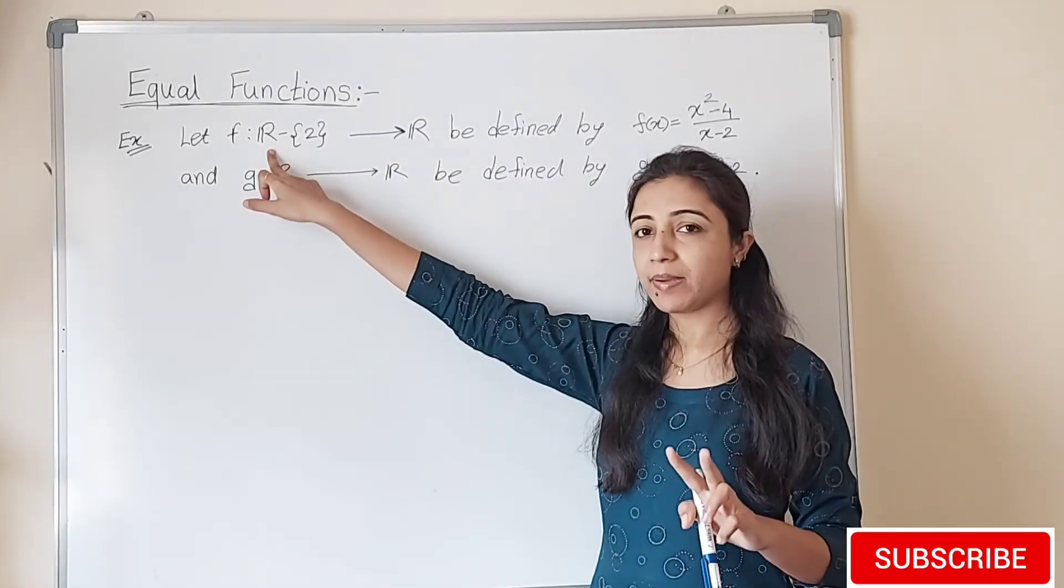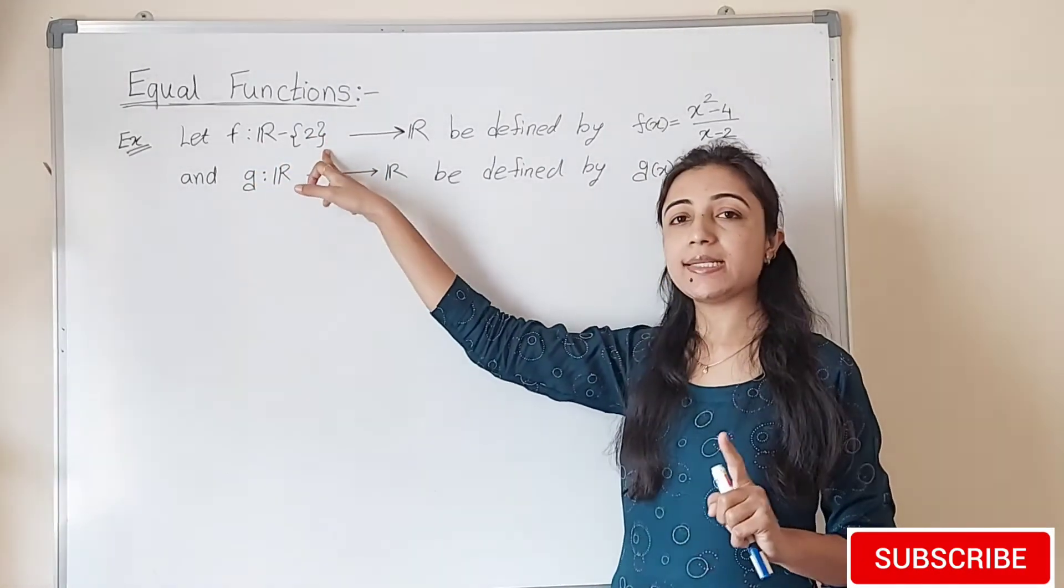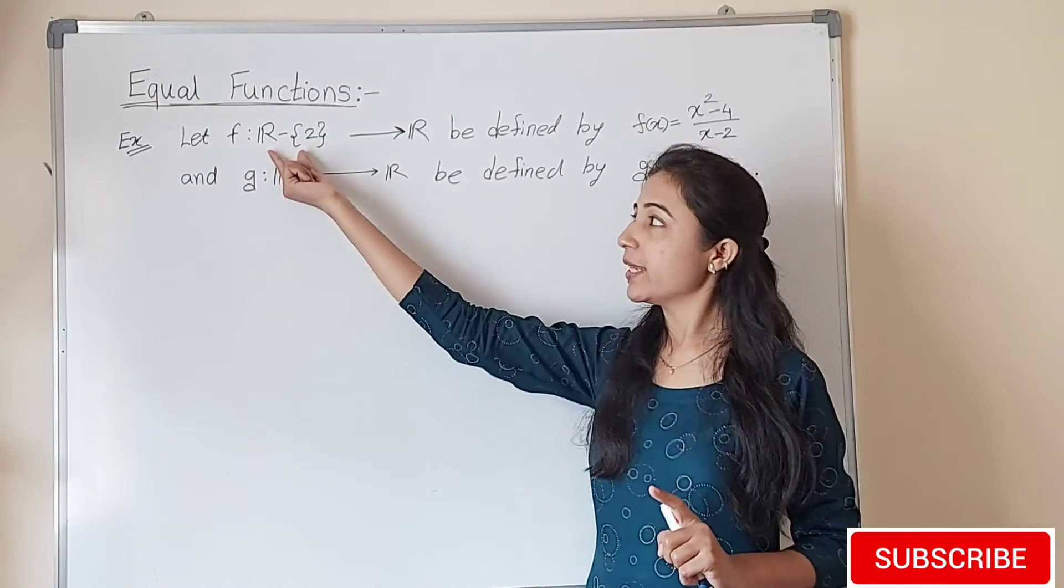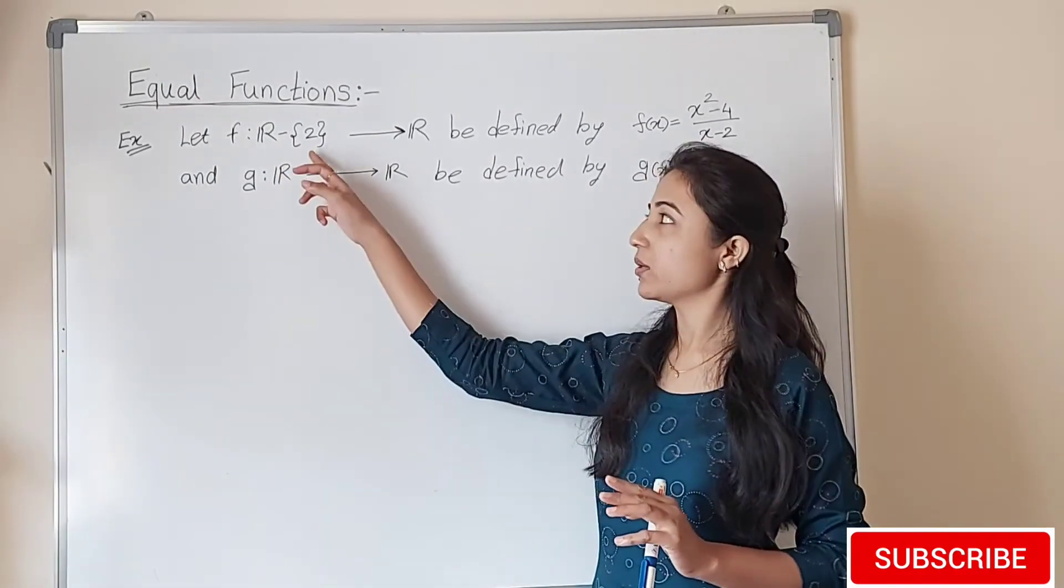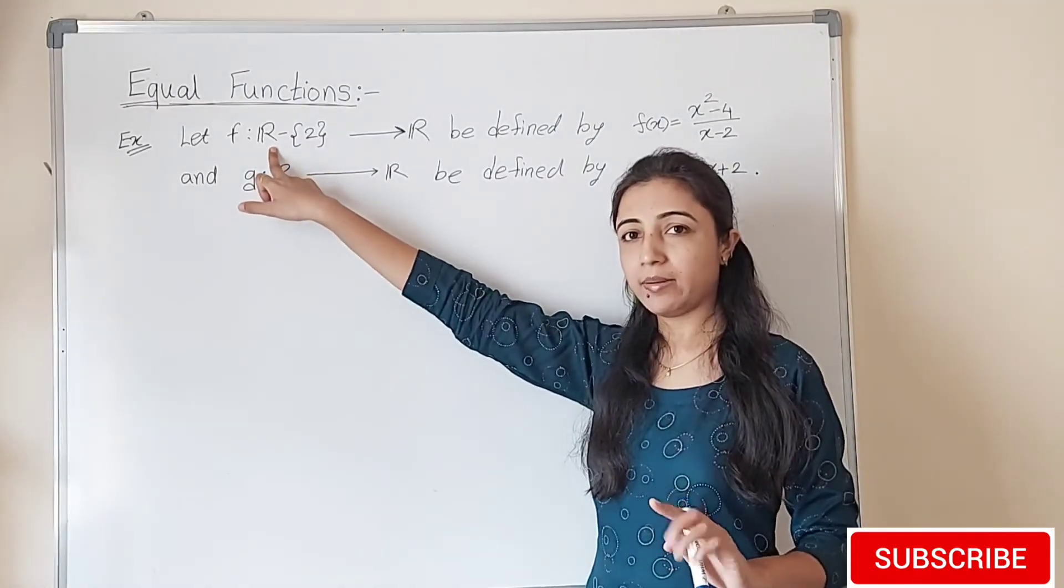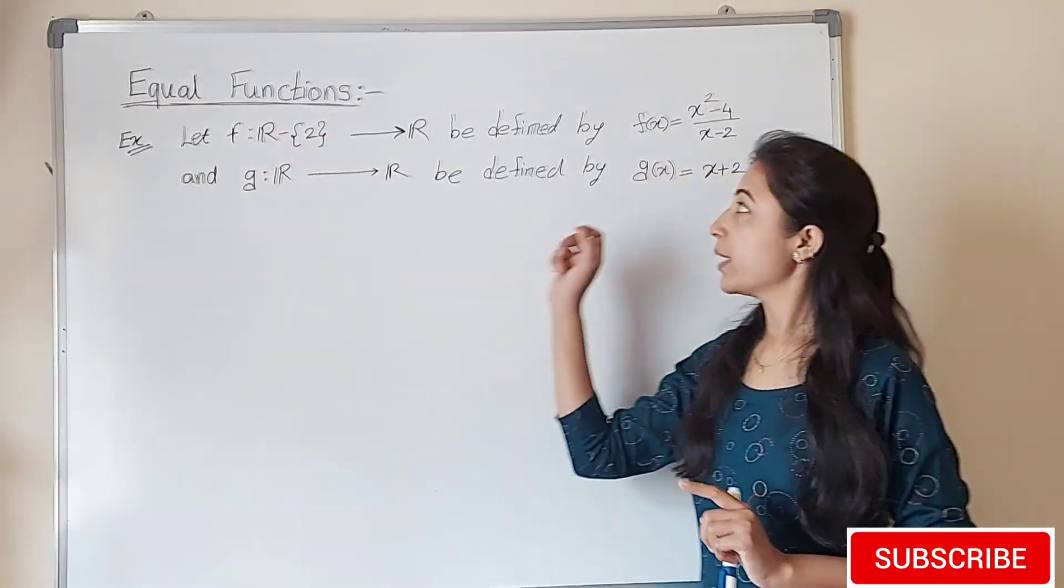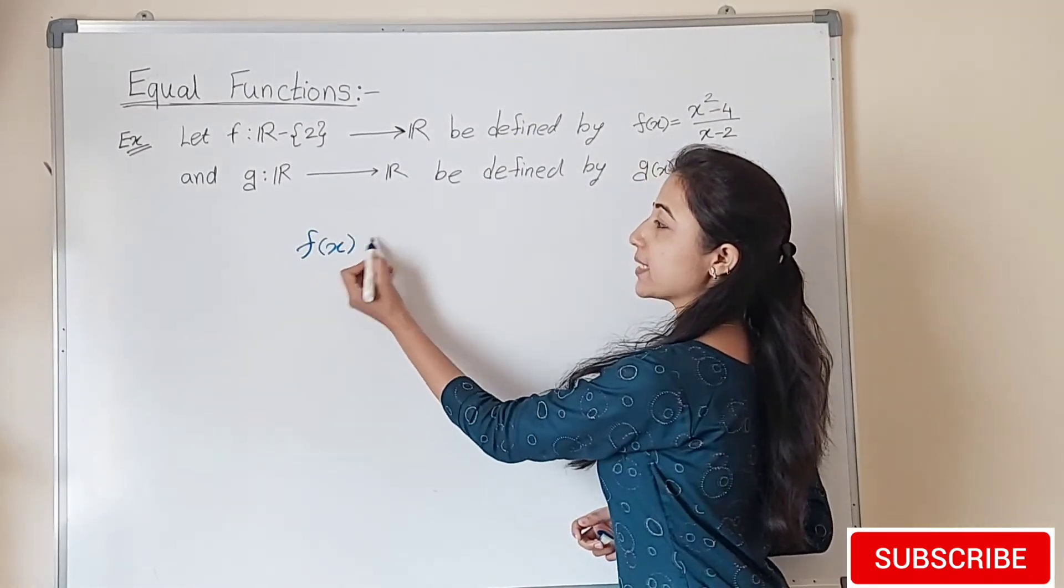Now see here what is R minus {2}. We know that in set theory we discussed the difference operator. So here two sets are given: set of real numbers and singleton set {2}. If we take the difference, it contains all real numbers except 2.